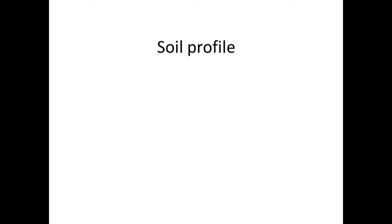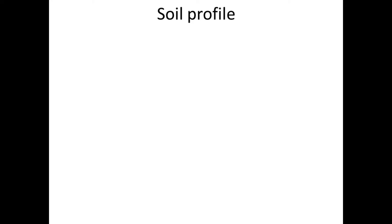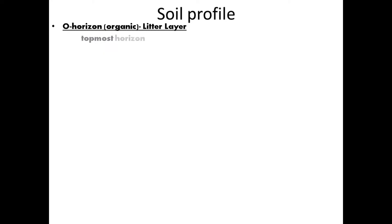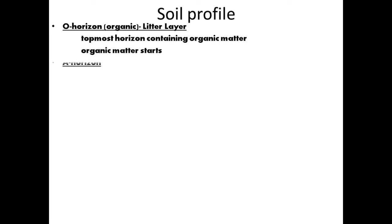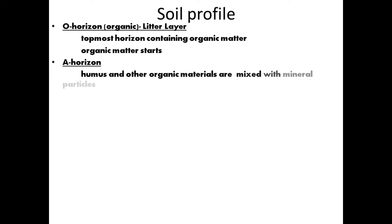The soil profile is the study of different layers of soil which are superimposed upon one another. The top layer is known as the O horizon — mainly an organic or litter layer, the topmost horizon containing organic matter where organic matter formation starts. Beyond the O layer is the A horizon, mainly rich in humus and other organic materials mixed with mineral particles.